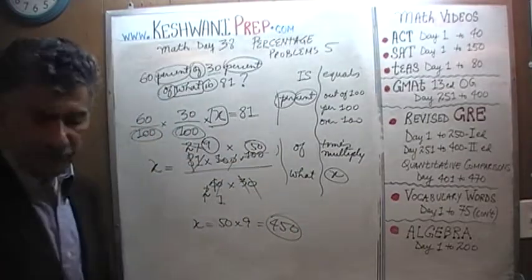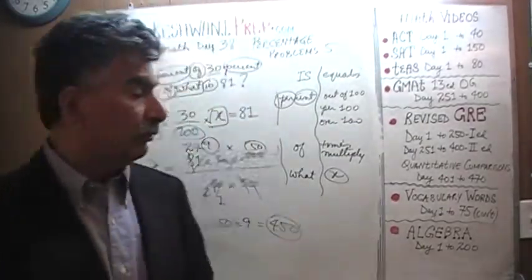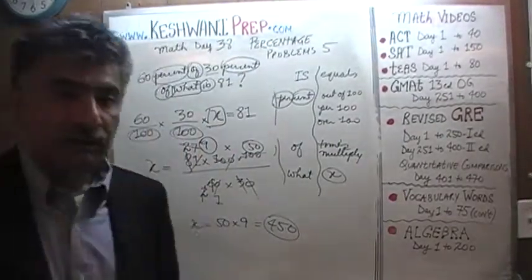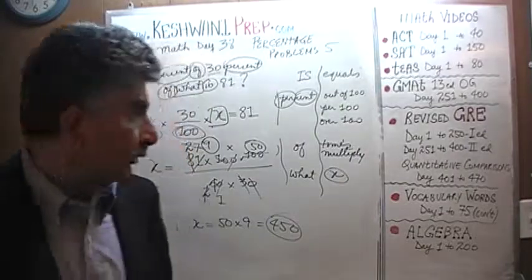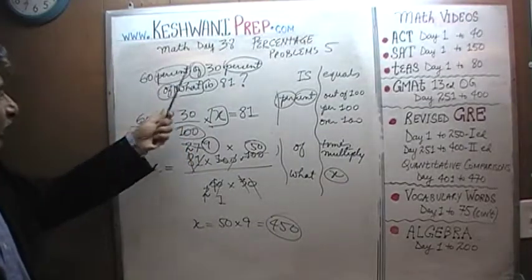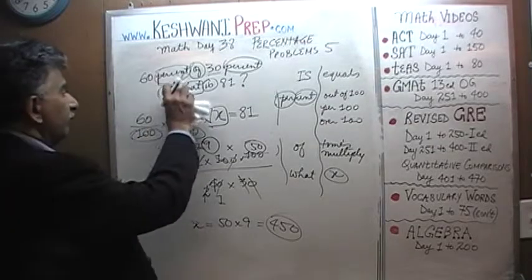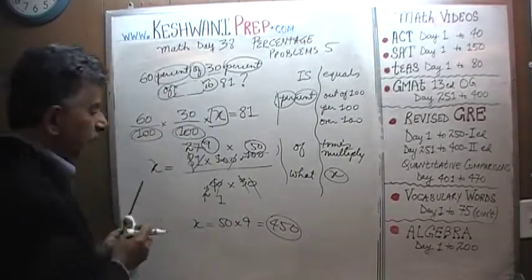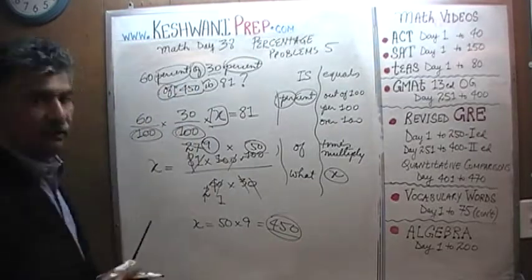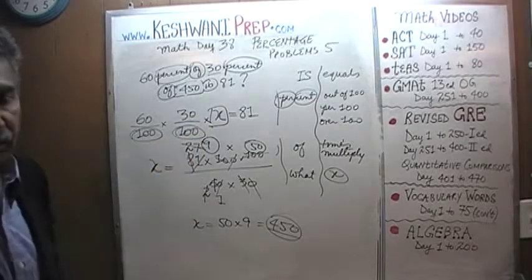Are we done yet? The answer is no — we're not quite done yet. We have to go back and plug this value into the problem and see if it actually makes sense. What we're claiming is that 60% of 30% of 450 equals 81.